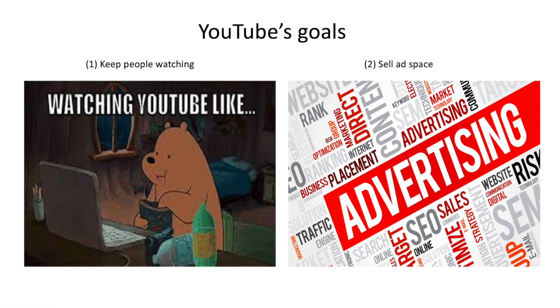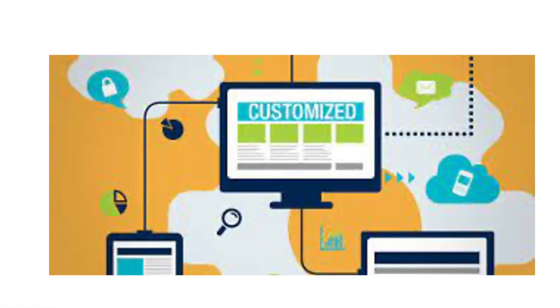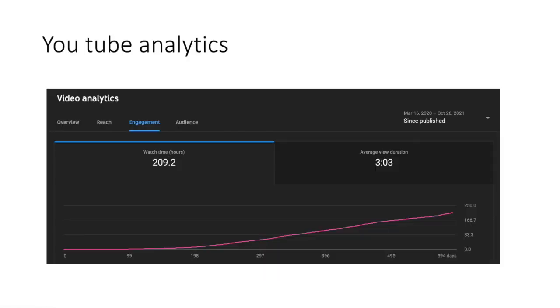To illustrate the concept of dimensionality reduction, I want to put biology aside for a second and talk about how YouTube recommends videos to its users. Let's pretend that we are the CEO of YouTube. As the CEO of YouTube, you really have two primary goals: first, to keep people engaging with your platform for as long as possible, and second, to monetize this engagement by selling advertising space on your website. In order to keep people engaging, you want to recommend videos tailored to each user, and to make money, you want to send users advertisements they are likely to be interested in.